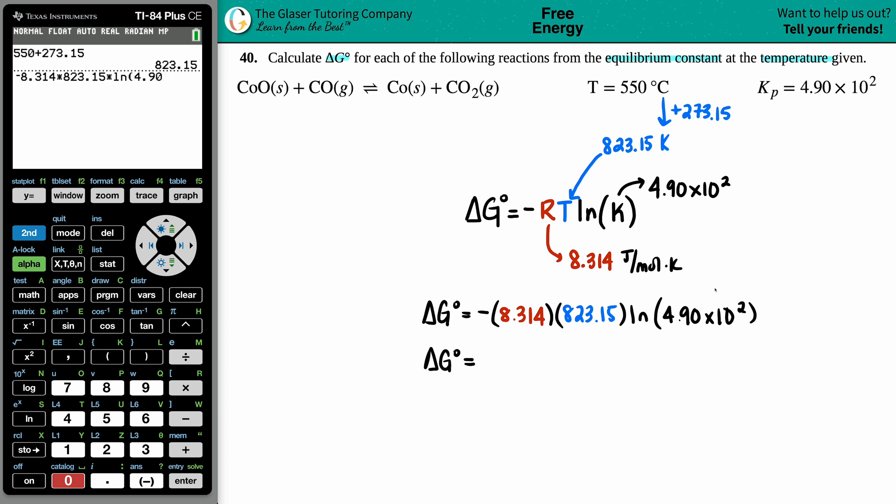Now I see that this is scientific notation times 10 to the—I don't like to write times 10 to the, I like to use the E button. If I say second comma, that E comes up. This means 4.90 × 10 to the, and then you just put the exponent 2. If you do it that way the calculator will always group together that scientific notation.